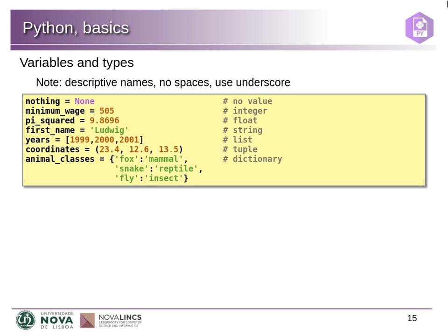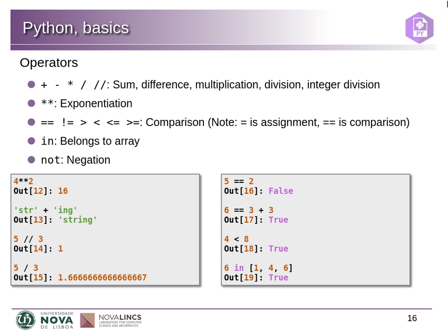These are the very basic elements for Python — there are more sophisticated ones you can import with different libraries. Now we need to do things to the data, so we have operators. The usual arithmetic ones are plus, minus, multiplication, and division. There is also integer division using two slashes — for example, 5 // 3 gives 1, which is the integer result without the remainder. You can also use double-star for exponentiation, so 4 ** 2 is 4 squared.